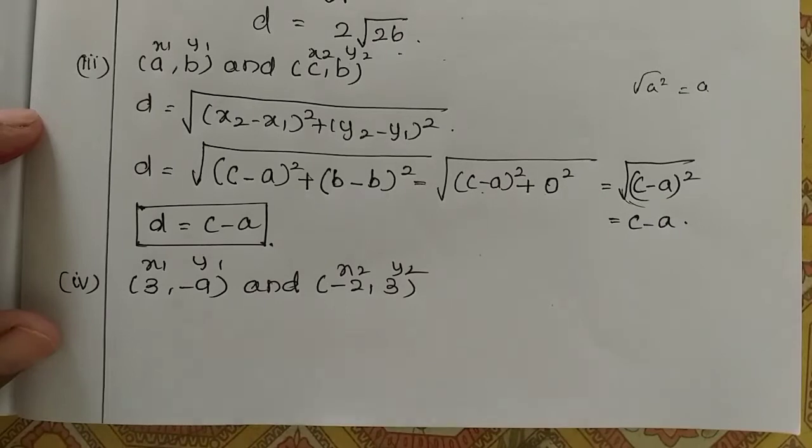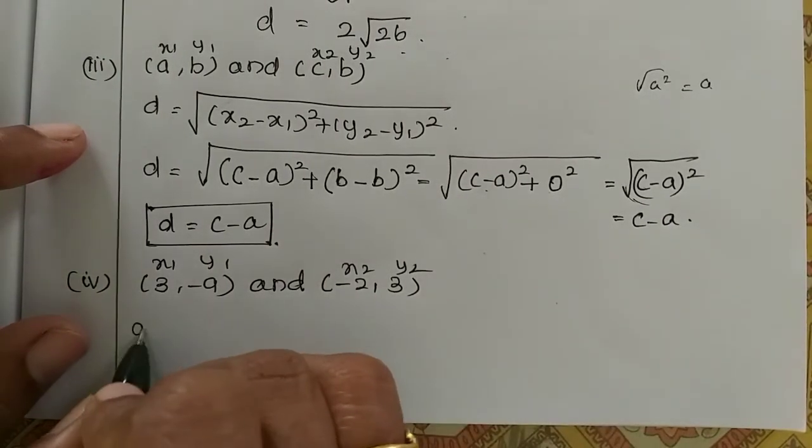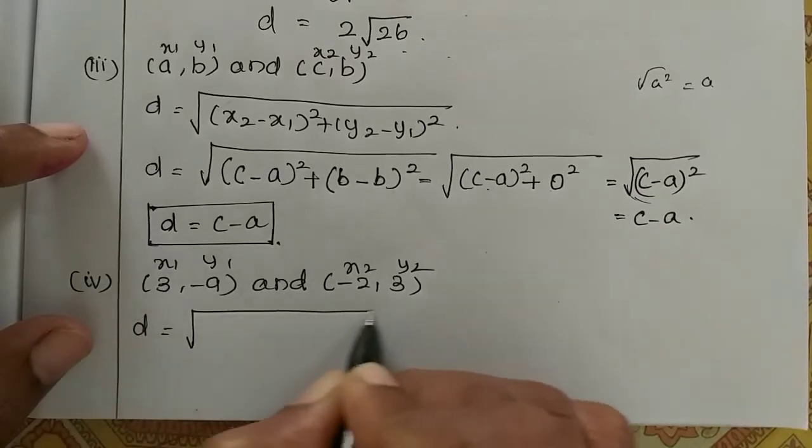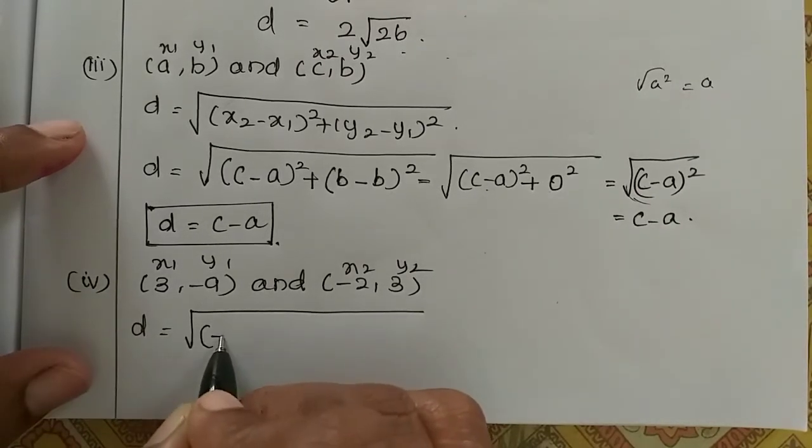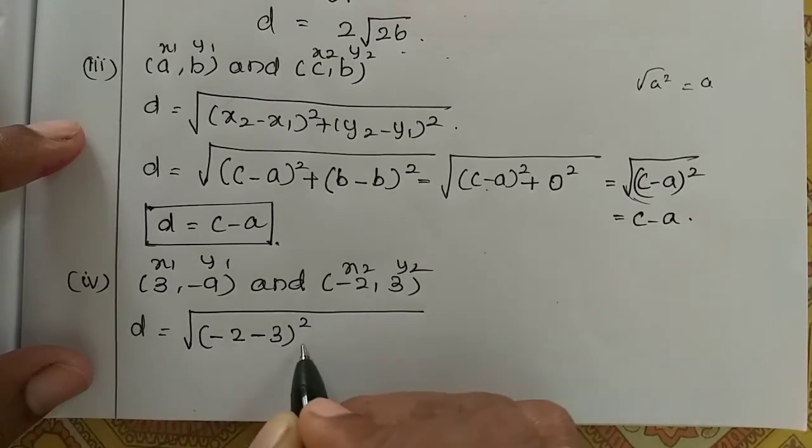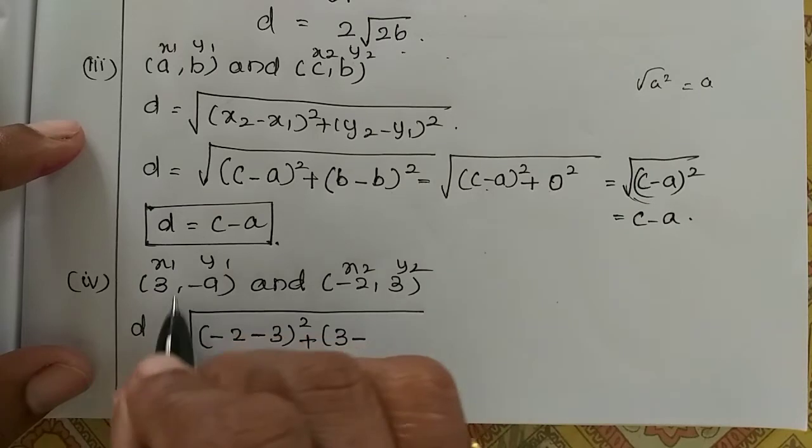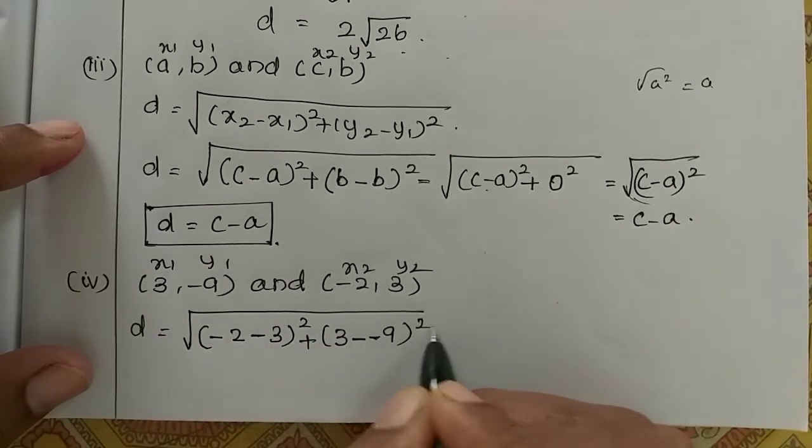So in this 4th subdivision, (3,-9) and (-2,3) is given. So in this distance we find. So x2 is minus 2 minus x1 is 3 the whole square plus y2 is 3 minus y1 is minus 9. Okay, be a little careful.